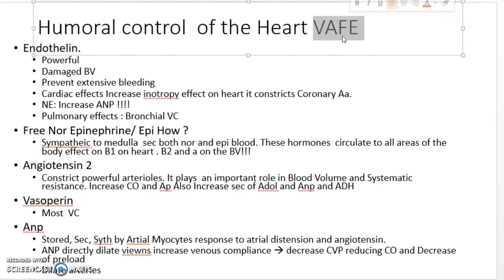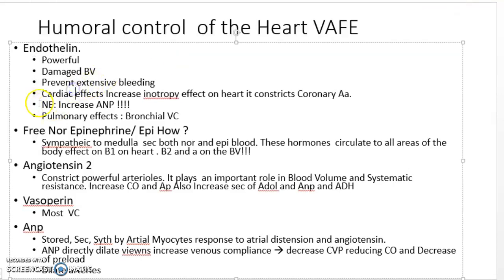Endothelin is a powerful vasoconstrictor with a humoral amount of effects, especially on pulmonary causes, producing bronchoconstriction. It is released in response to bleeding and damaged blood vessels. It causes an inotropic effect, constricts the coronary arteries, and increases cAMP.